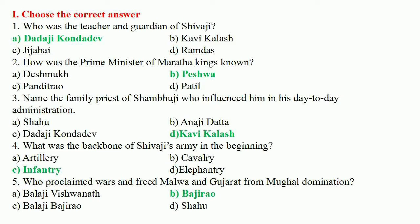Fifth question: who proclaimed wars and freed Malwa and Gujarat from Mughal domination? The answer is option B, Baji Rao.